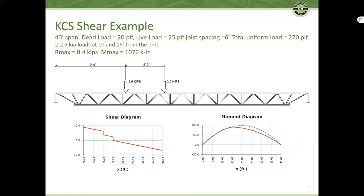First, let's focus on shear. Let's say two 2.5 kip loads at 10 and 15 feet from the end. This results in a maximum end reaction of 8.4 kips and the moment of 1076 kip inches at 15 feet.